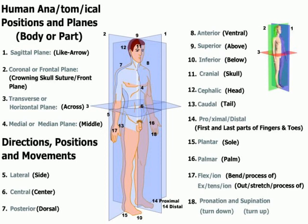Number fourteen is the proximal and distal aspects of something. Proximal means closest to, or the first segment of a finger or toe. Distal means the last segment, or the part that's furthest away — the distant aspect.